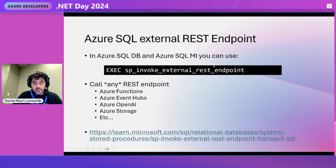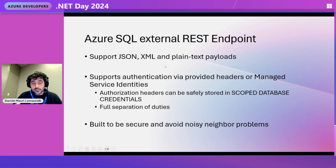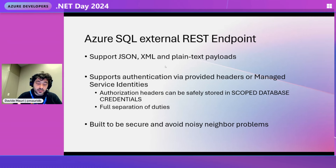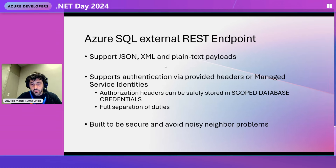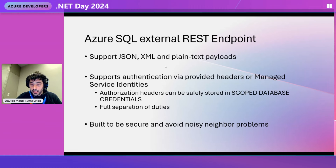You can call any function, REST endpoint, Event Hub, interact with Azure Storage, or use OpenAI to get embeddings from text. It supports JSON, XML, and plain text payloads — anything that typically comes in and out of a REST endpoint. It supports managed identities, and if you need a specific header with secrets, you can use scoped database credentials so everything is securely stored and only accessible to those with the right permissions. We only support HTTPS protocol, don't follow redirects, and have throttling built in to prevent noisy neighbor problems.